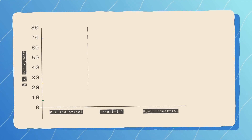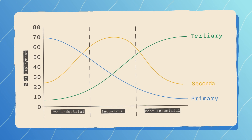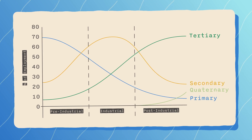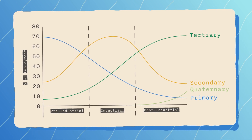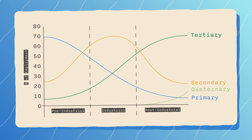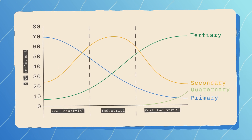Now that we're clear on the types of industry, let's have a look at the Clark Fisher model. As a country develops, the proportion of people working in each sector changes. The model has three phases.